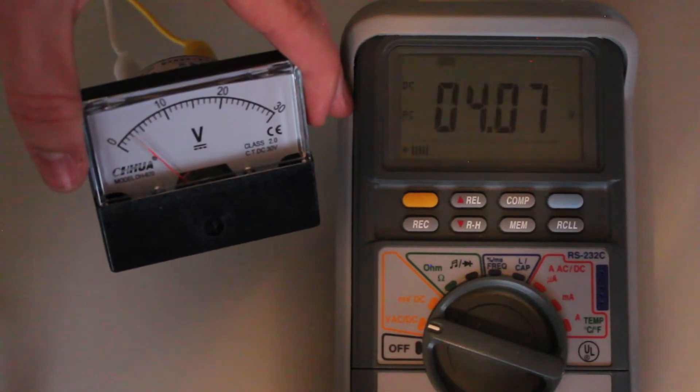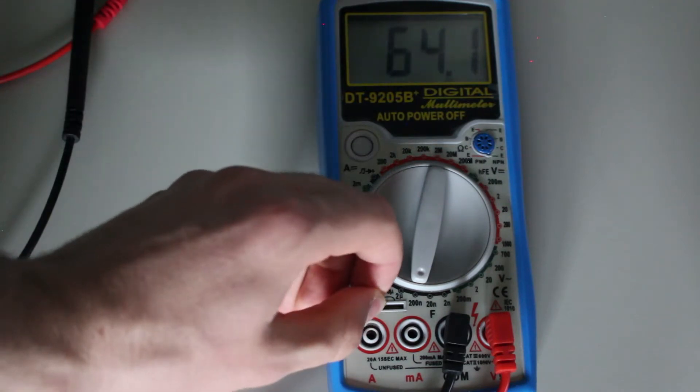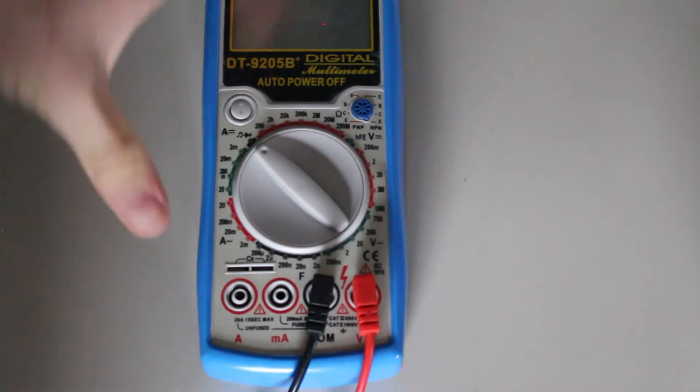And finally, a capacitor meter. All the features I just mentioned are not at all needed and are not deal breakers, just some things to look out for when buying a new meter.